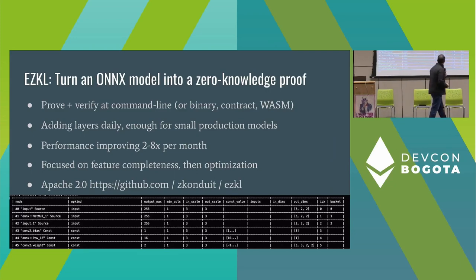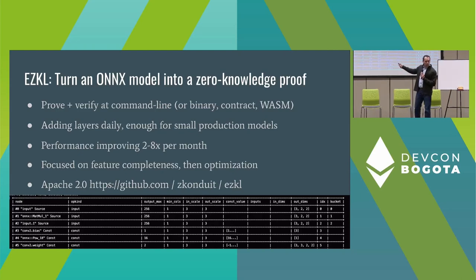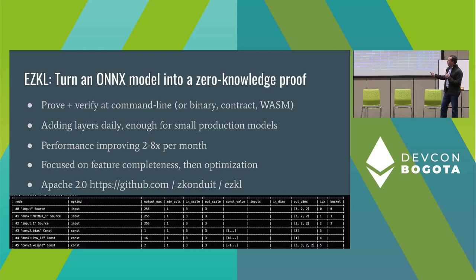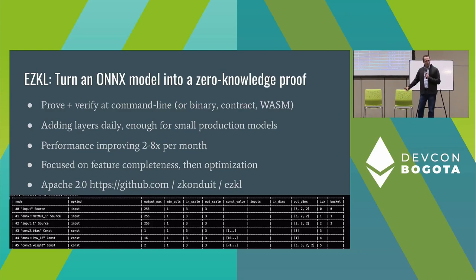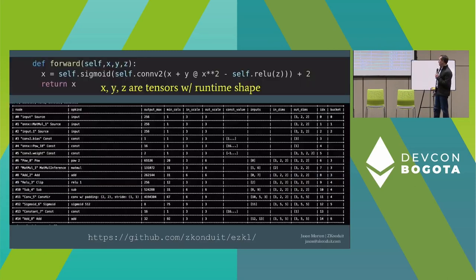What we've built is a program called Ezekiel. It is a tool to take an ONNX model — an export you can make from PyTorch or TensorFlow — a baked machine learning model that's been trained, and turn it into a zero-knowledge proof. We can prove and verify at the command line, export to a binary, a smart contract, or WASM. We're adding new layers to it daily and it's enough for small production models. The scale is increasing very quickly, roughly two to eight times a month. We've been building in the open since July — it's Apache 2.0 licensed, and we would love any contributions.